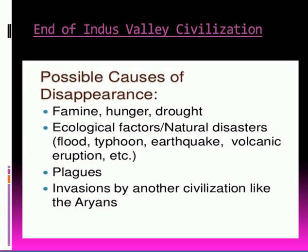The end of Indus Valley civilization. There are a lot of mysteries about the ancient people of Indus Valley. About 3,000 years ago, this great civilization began to fall, and the cities of Harappa and Mohenjo-Daro became ruins.